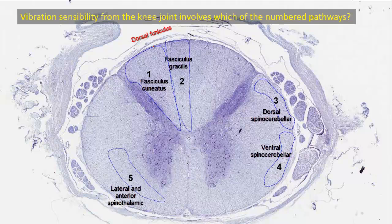The dorsal funiculus, comprising fasciculus gracilis (2) and fasciculus cuneatus (1), is concerned with the same modalities: proprioception, fine touch, and vibration. Vibration sensibility from the knee joint will be transmitted in the posterior funiculus. The difference between one and two is that sensations from the lower limb ascend medially in fasciculus gracilis, while sensory information from the upper limb ascends laterally in fasciculus cuneatus, because fibers are added to the posterior funiculus from the lateral side.